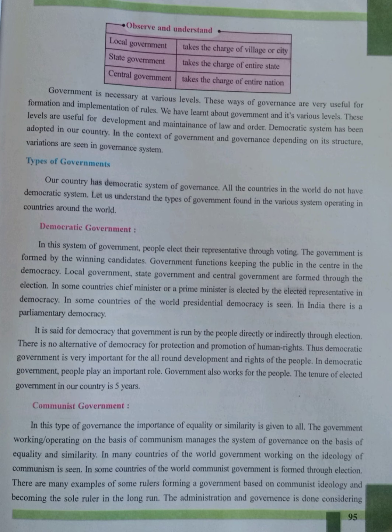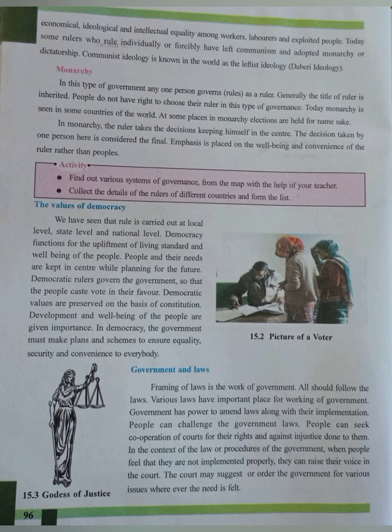In communist government, equal importance is given to all. The government operating on the basis of communism manages the system of governance on the basis of equality and similarity. In many countries, government working on the ideology of communism is seen. In some countries, communist government is formed through elections, but there are examples of rulers forming a communist government and becoming the sole ruler in the long run. The administration is conducted considering economical, ideological, and intellectual equality among workers, laborers, and exploited people. Some rulers who rule forcibly have left communism and adopted monarchy or dictatorship. Communist ideology is known in the world as the leftist ideology.